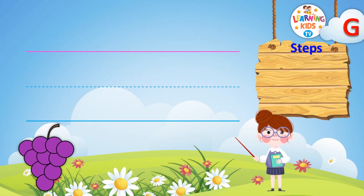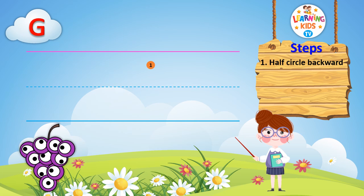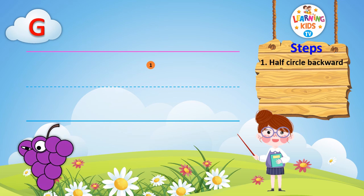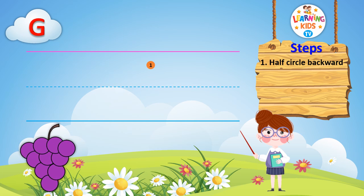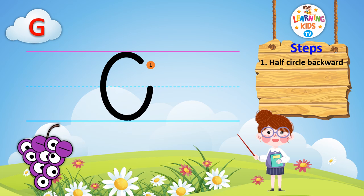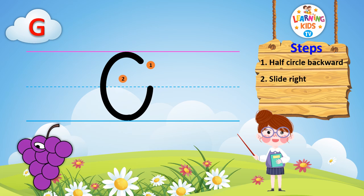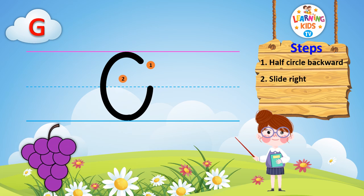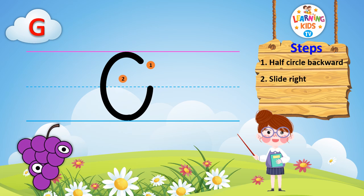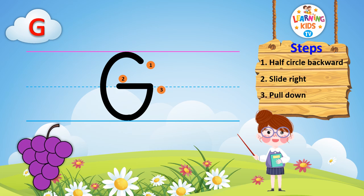Learn to write uppercase letter G. Step 1: half circle backward. Step 2: slide right. Step 3: pull down.